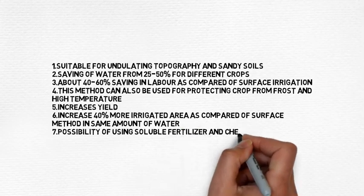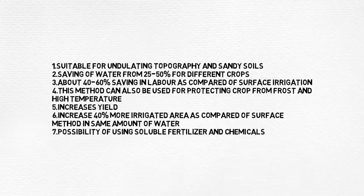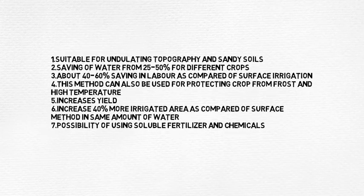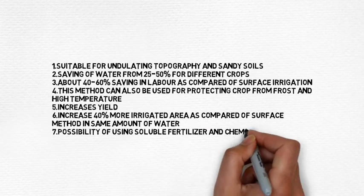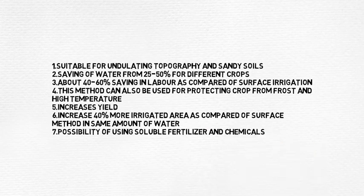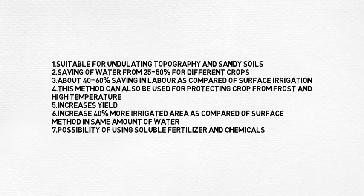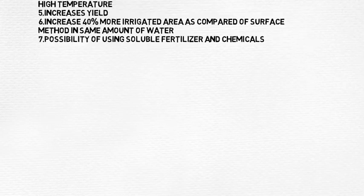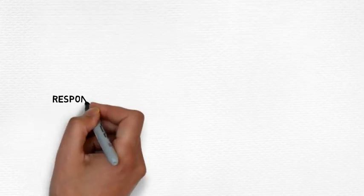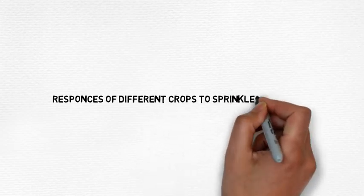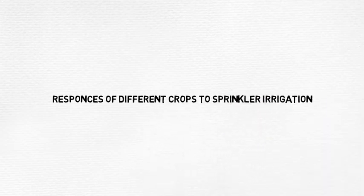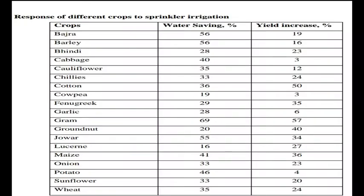It increases yield and provides 40% more irrigated area as compared to surface irrigation. There is also the possibility of using soluble fertilizers and chemicals. You can now see the responses of sprinkler irrigation to different crops on screen.